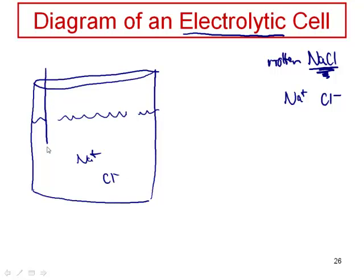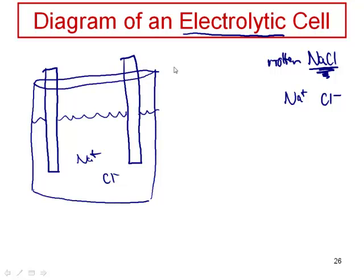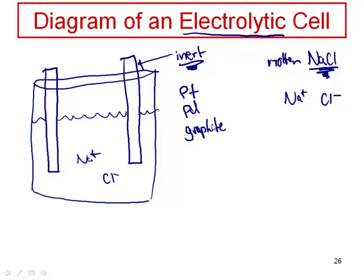I'm also going to have two electrodes dipped into my solution, but in this case the identity of these electrodes is usually going to be something which is inert. Oftentimes you're going to have an inert electrode — if you guys remember, I gave you a list of inert electrodes, and oftentimes it's going to be platinum, palladium, or graphite. These electrodes, for the sake of our argument, are made out of platinum.